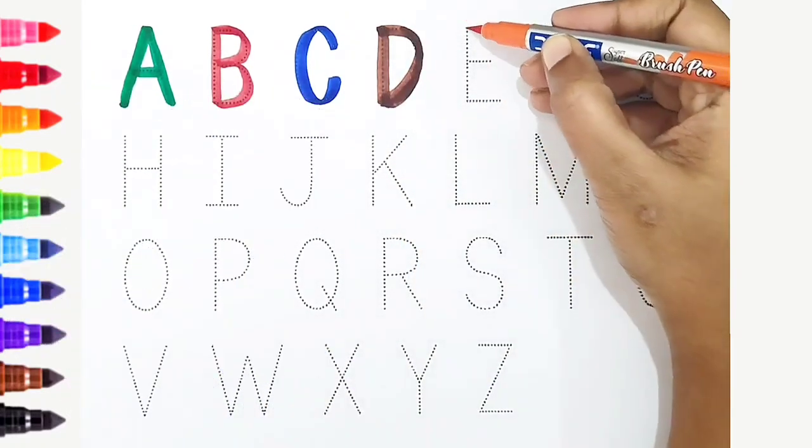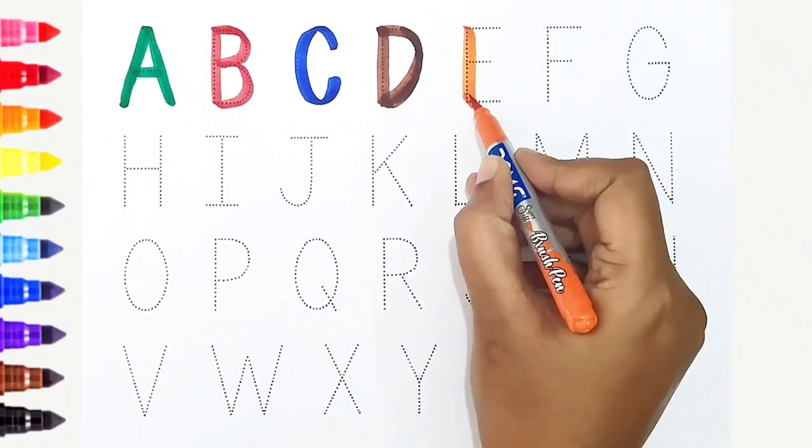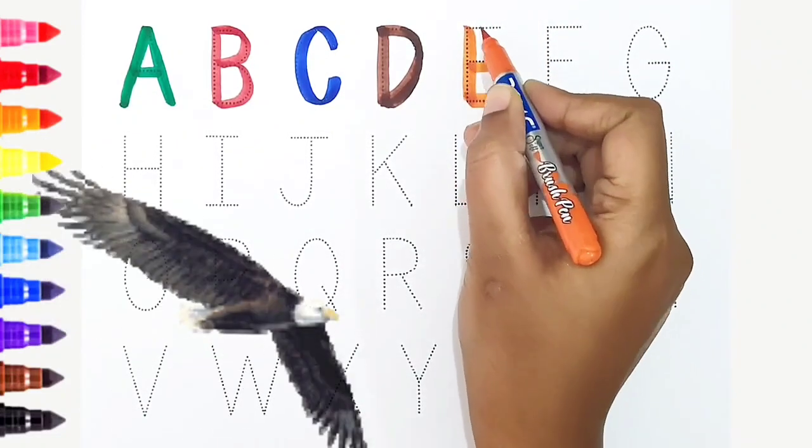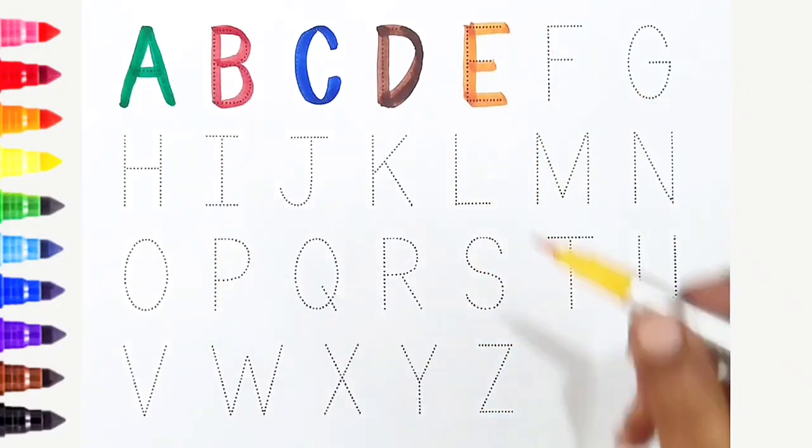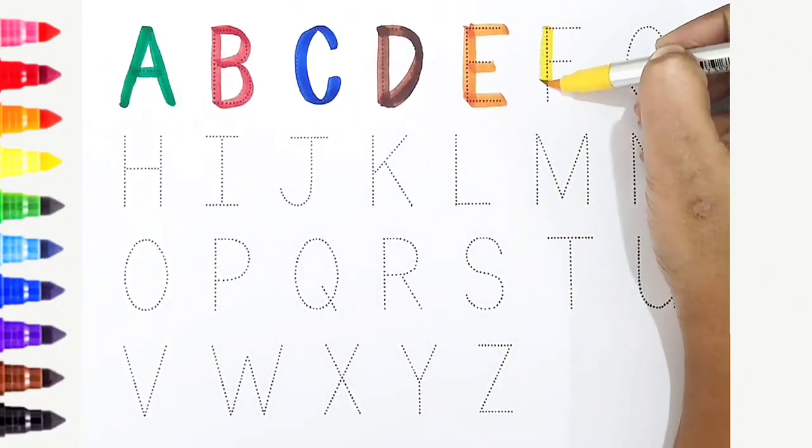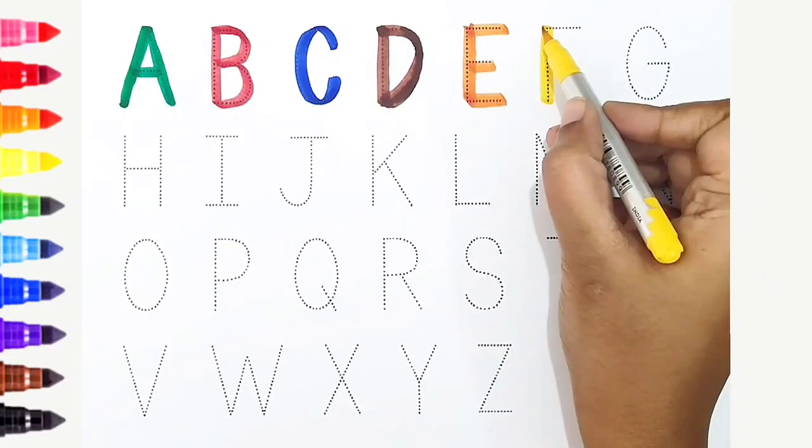E, orange color. E is for eagle. F, yellow color. F is for frog.